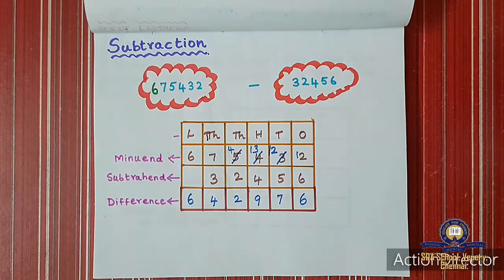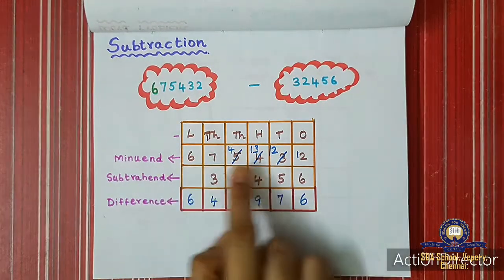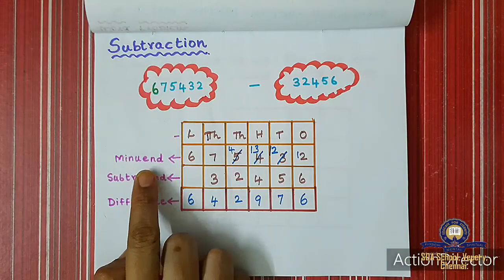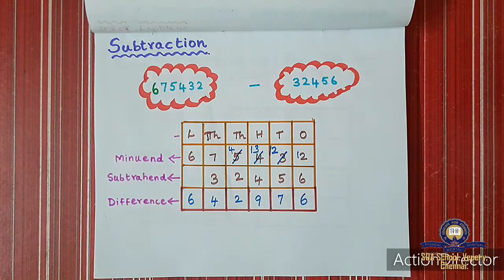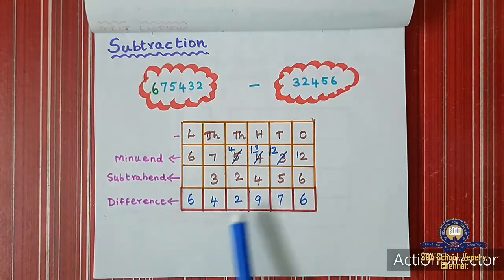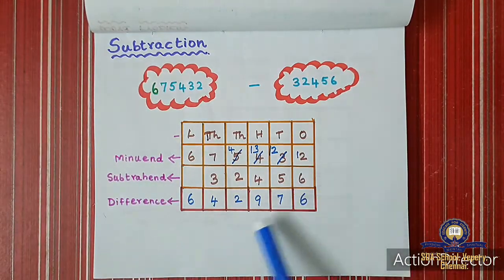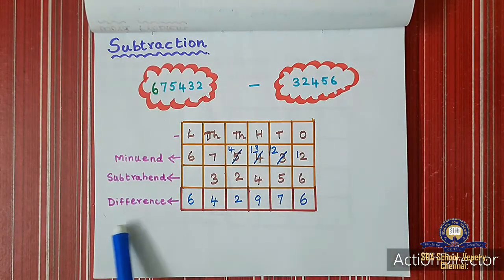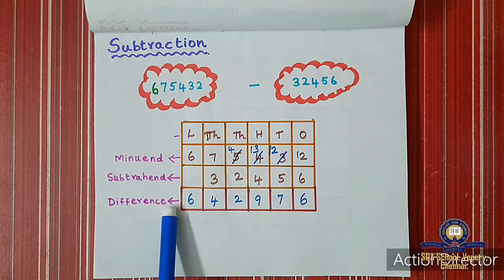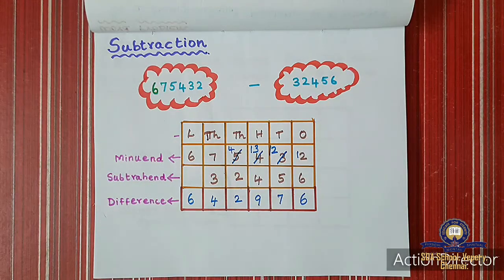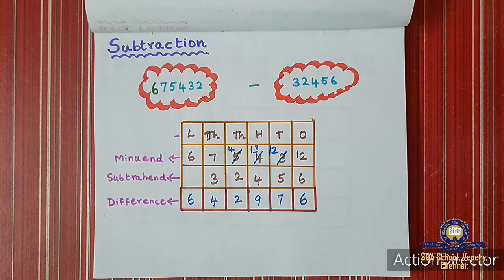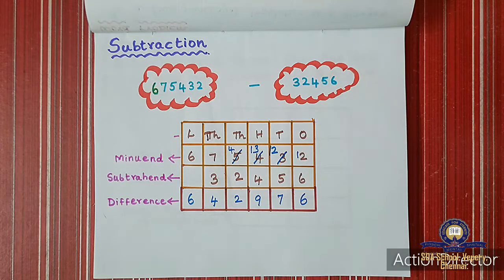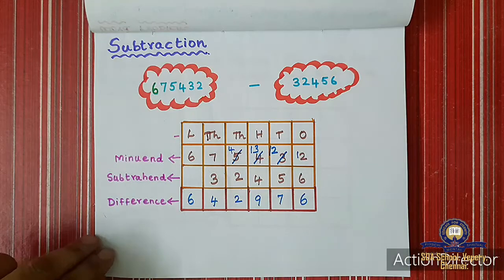This first number is called the minuend. The second number is called the subtrahend, and the answer we are getting is called the difference. Whenever in subtraction, the answer we get is called the difference.